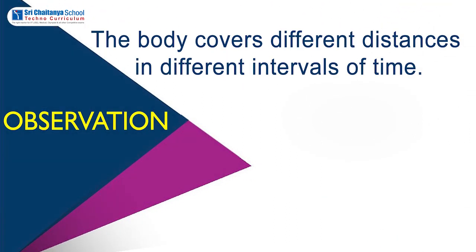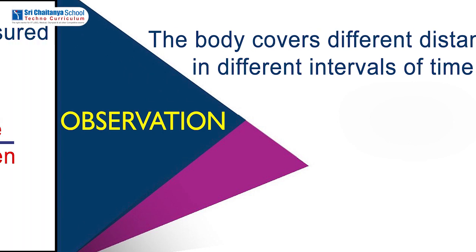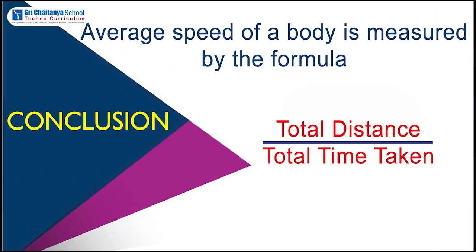Observation: the body covers different distances in different intervals of time. Conclusion: the average speed of a body is measured by the formula — average speed is equal to total distance divided by total time taken.